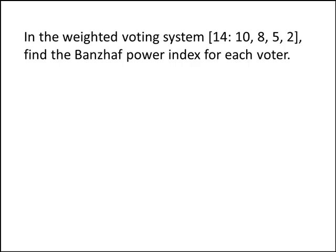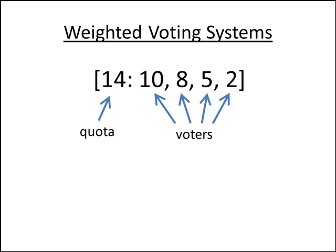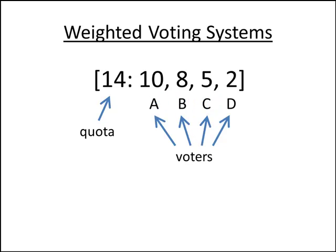First we need to understand the terminology we're using here. In a weighted voting system, we have voters whose votes are worth different amounts of points. We also have a quota which tells us how many points we need to get a motion to pass. In this case, we have four voters whose votes are worth 10, 8, 5, and 2 respectively. We'll give these voters names — we'll call them A, B, C, and D in order.